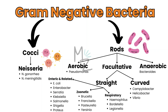Neisseria gonorrhoeae and Neisseria meningitidis are gram-negative cocci. Gram-negative rods are further subdivided into aerobic like Pseudomonas, anaerobic like Bacteroides, and facultative. Facultative gram-negative rods are subdivided into curved — which includes Campylobacter, Helicobacter, and Vibrio — and straight. Straight ones are further subdivided into enteric and related, such as E. coli.